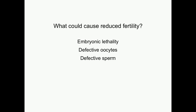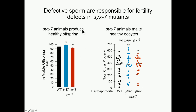We are a sperm lab, so I was hoping it was a sperm defect, but there are many different things that can contribute to reduced fertility. One of the first things I wanted to do was rule out contributions from common causes such as embryonic lethality or defective oocytes. I tested if loss of 6-7 causes developmental or embryonic lethality by counting eggs laid by hermaphrodites and then counting offspring that made it to at least the L4 stage. There was no difference in 6-7 mutants compared to wild type.